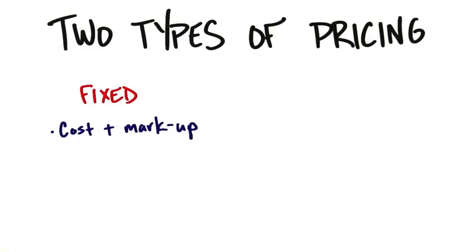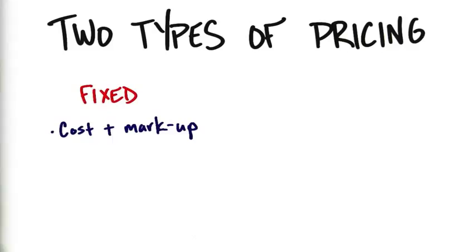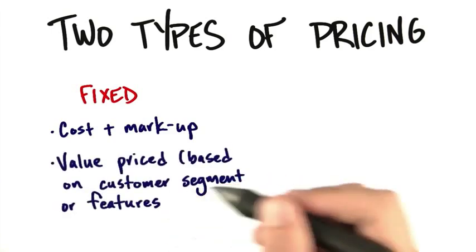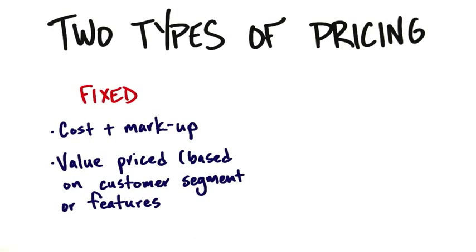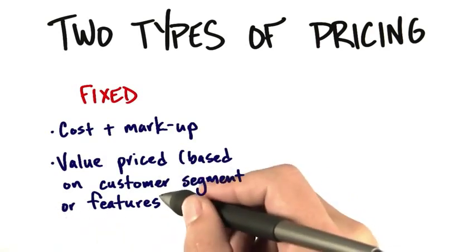Cost plus markup gets you to the minimum price in the market. But you might know something that your competitors don't know, because you've been out talking to these customers for weeks or months, and you know that they actually value your feature set and your value proposition more than your competitors. In an existing market, you know exactly how much they value what you will offer. So instead of pricing based on cost, you could actually price on specific customer segments or on features you know they need.